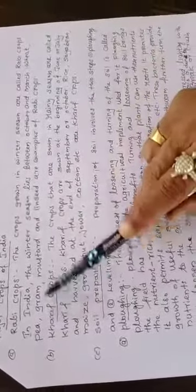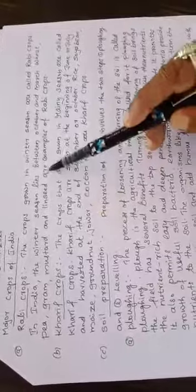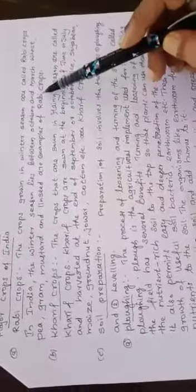Wheat, pea, gram, mustard and linseed are examples of Rabi crops.